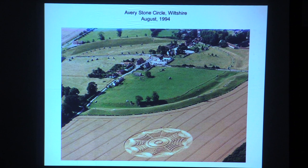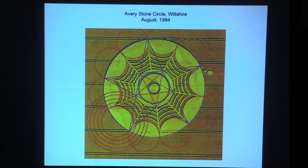Avebury Stone Circle is a man-made formation from thousands of years ago, built for some sacred purpose. Honoring that sacred formation, we have what's called the spider's web — and there is the hidden geometry of how that spider's web was created. Although there are three thought-bubble shapes on the right-hand side that are not part of the geometry.